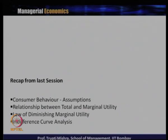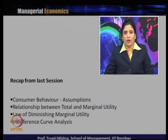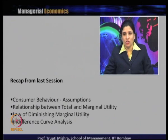Then we introduced the concept of total utility and marginal utility, and how both of them are related to each other. Total utility and marginal utility are based on the perception of the consumer on the satisfaction they get after consuming a product. Then we introduced the concept of the law of diminishing marginal utility, which tells us that when a consumer goes on consuming a product, after a certain point the marginal utility diminishes, sometimes reaches zero, and sometimes becomes negative.